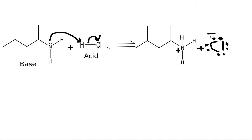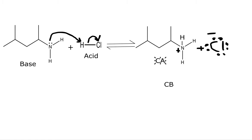Now, which side is favored? First, let's figure out what is our conjugate acid and our conjugate base. Our conjugate acid, represented by CA, is the molecule that gained a proton — so this molecule right here is our conjugate acid. The molecule that lost a proton is the conjugate base. Hydrochloric acid lost a proton, so this anion right here is the conjugate base.